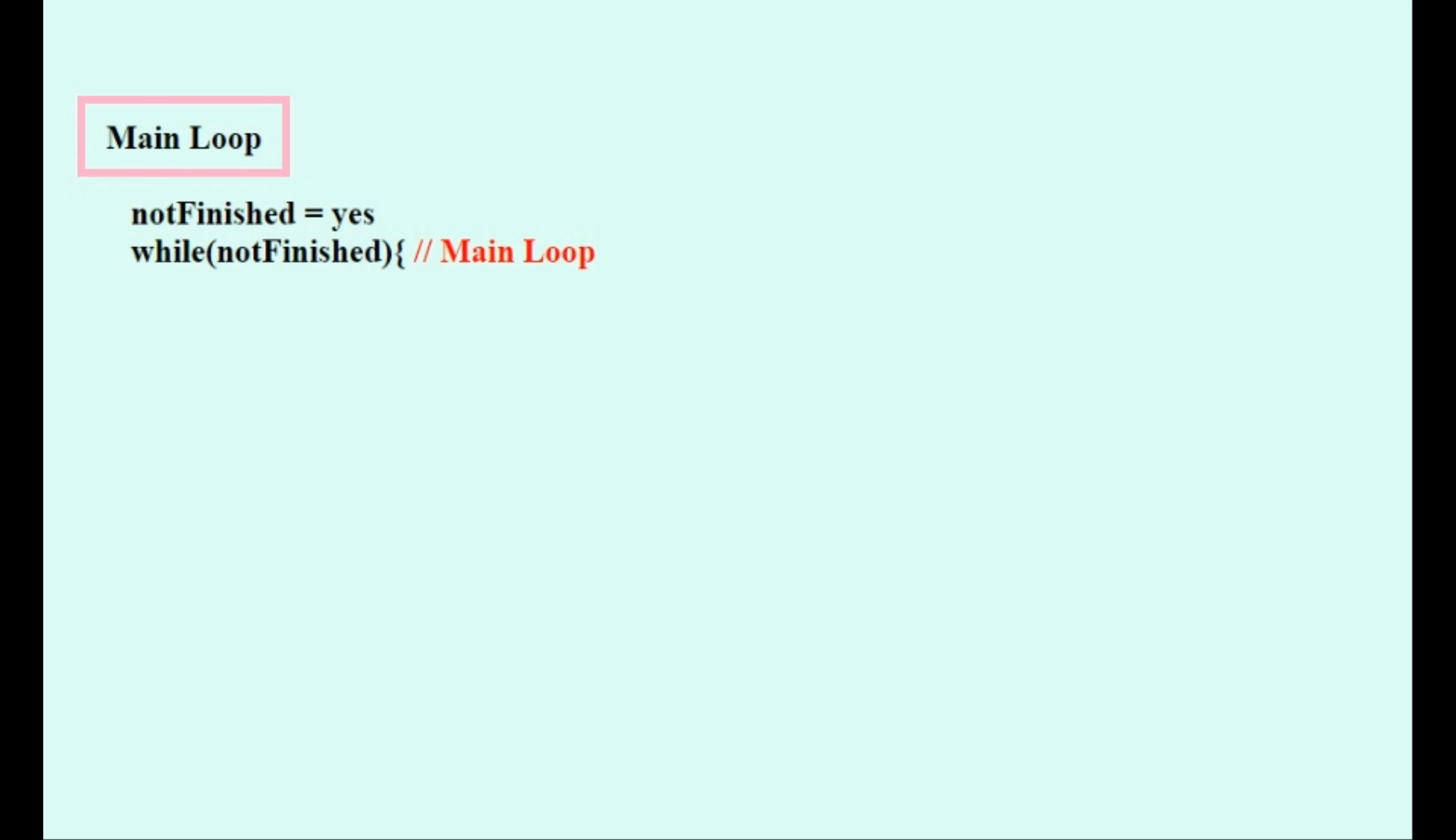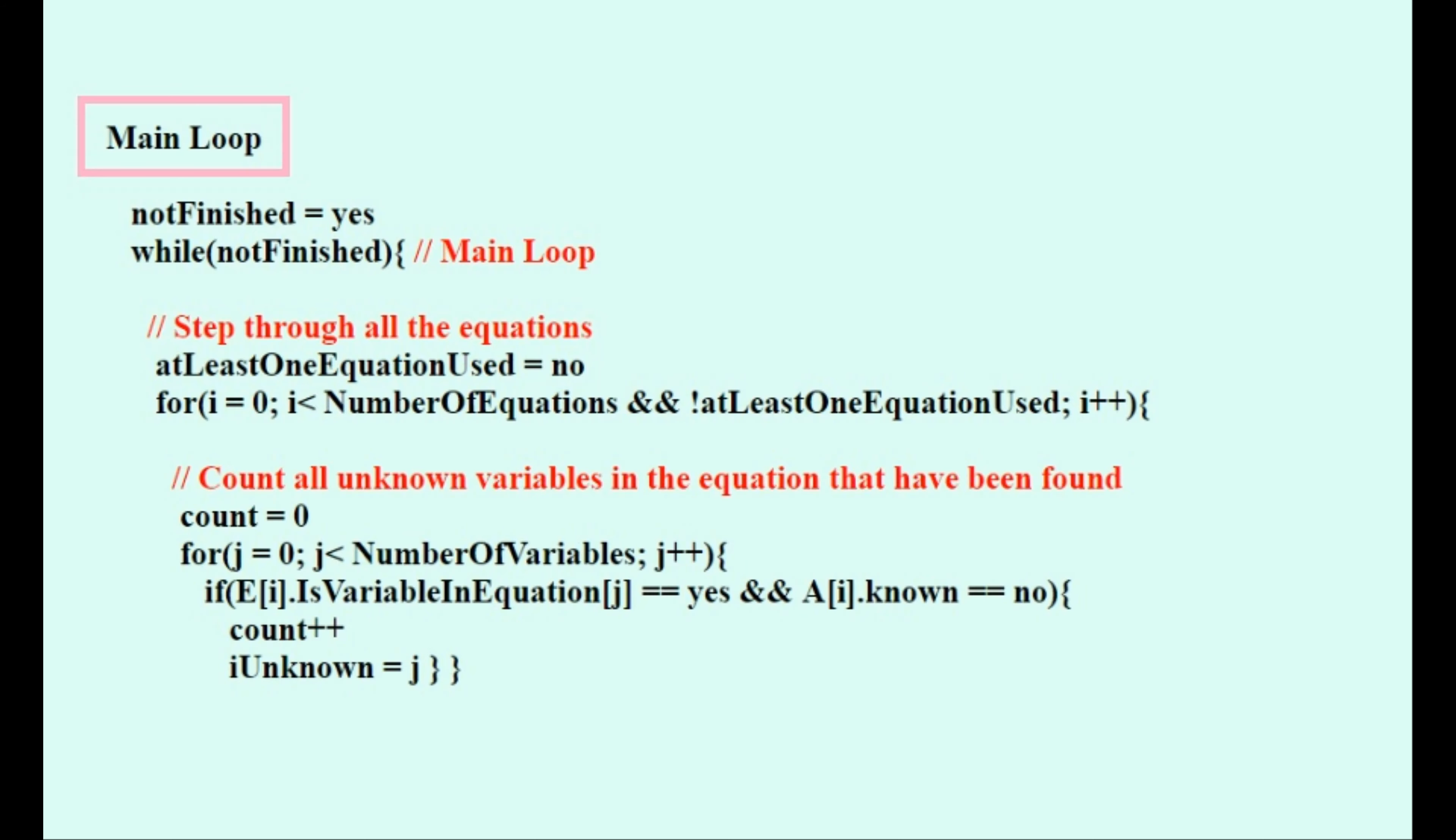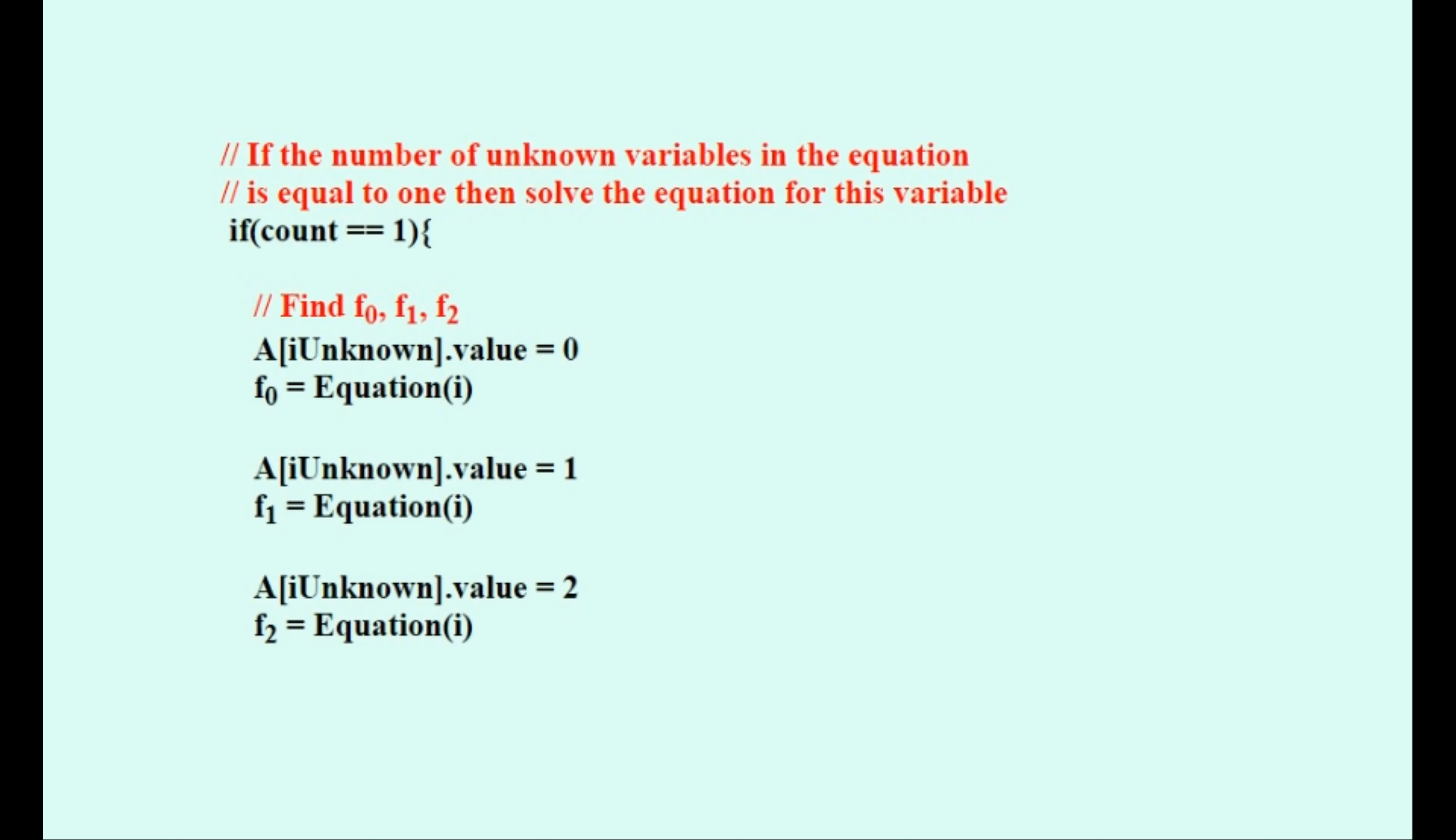And now to start the main loop of this program. We'll loop until not finished is set to no. We'll loop through all of the equations, and if no equations are used, then the main loop is finished and we'll jump out of the main loop. We can jump out of the second loop after one of the equations is used and so start again from the beginning of the equation list, hopefully to avoid nonlinear equations at the bottom of it. We'll count all of the unknown variables in this equation, and if there is exactly one unknown variable in it, then we can solve it for this variable. So if we can solve it,